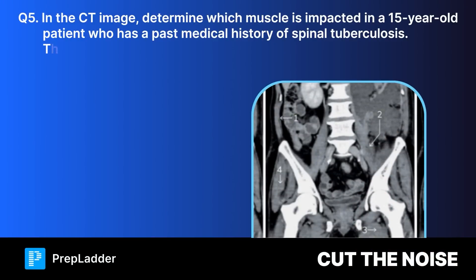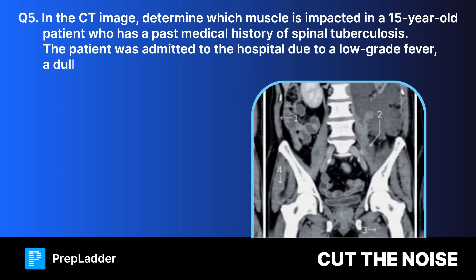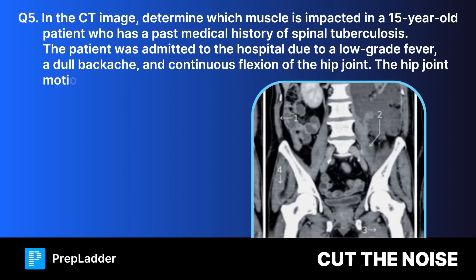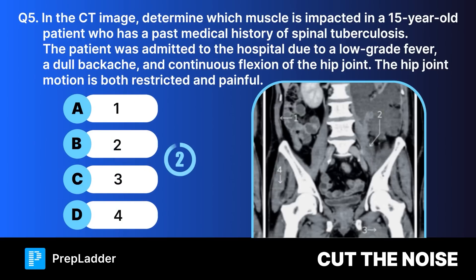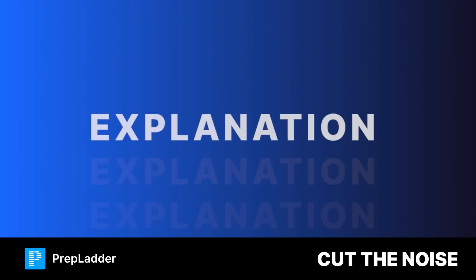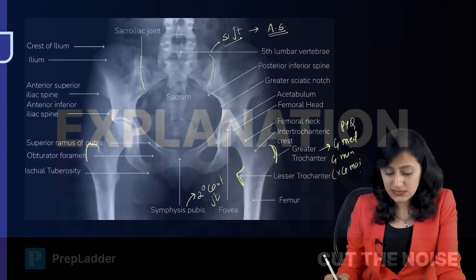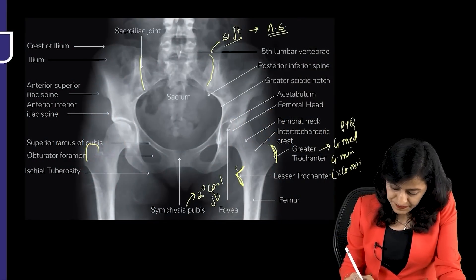Question five: In a CT image, a 15-year-old with spinal tuberculosis presents with low-grade fever, dull backache, and continuous hip flexion with restricted painful hip movement. The correct answer is the iliopsoas muscle (option two). The iliopsoas muscle inserts on the lesser trochanter — this represents a psoas abscess secondary to spinal TB.